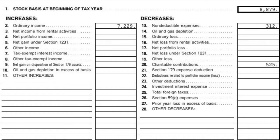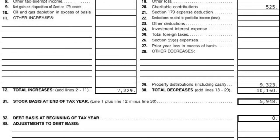Now, there are a couple of other decreases. If you have any non-deductible expenses — something like meals where only 50% is deductible — the rest is a non-deductible expense. Charitable contributions are separately stated and reported differently on your tax return, so they are also a decrease in your basis. In this case, they took distributions of $9,000 out, leaving total decreases in basis for the year at about $10,000. So with the $9,000 beginning basis, $7,200 increase, and $10,000 decrease, your stock basis for the year is just under $6,000 — which is great because it's not negative.